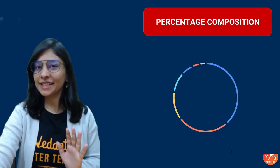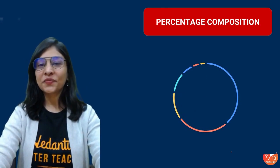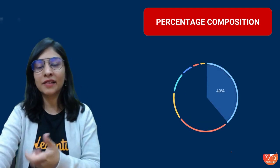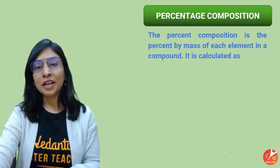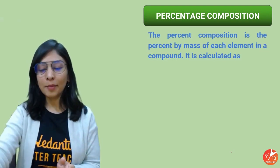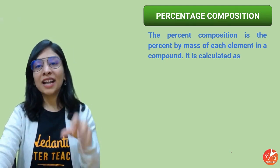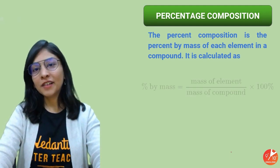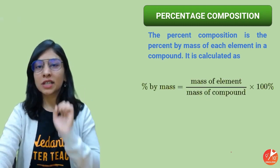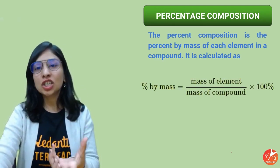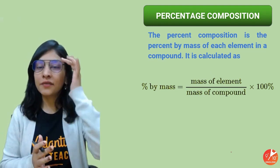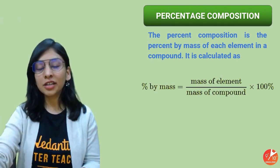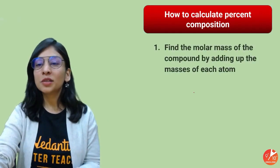Now let's talk about percentage composition. Percentage means per hundred; composition means the amount they are having. Percentage composition is the percent by mass of each element in a compound. For water, H₂O: the mass percentage of hydrogen is the total mass of hydrogen divided by total mass of the compound multiplied by 100, and same for oxygen. That gives us the mass percentage of each element in the molecule. The formula is simply: mass of the given element divided by mass of the compound, multiplied by 100.